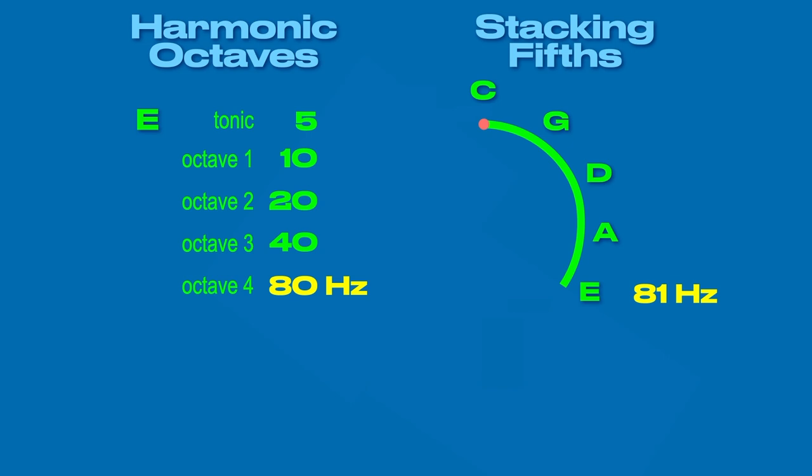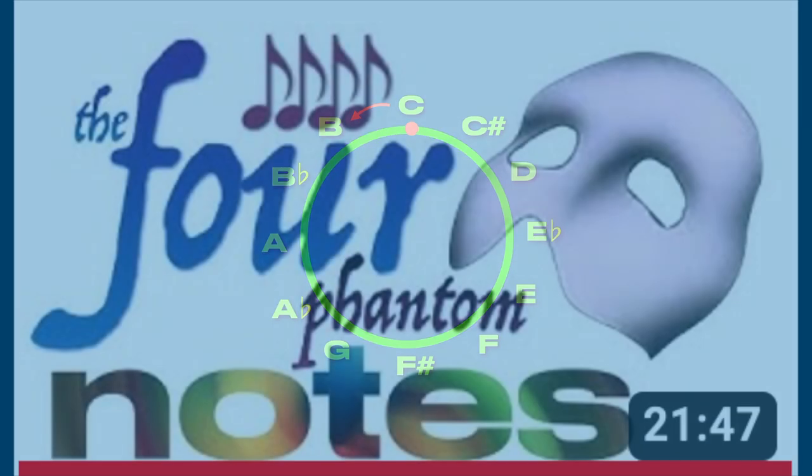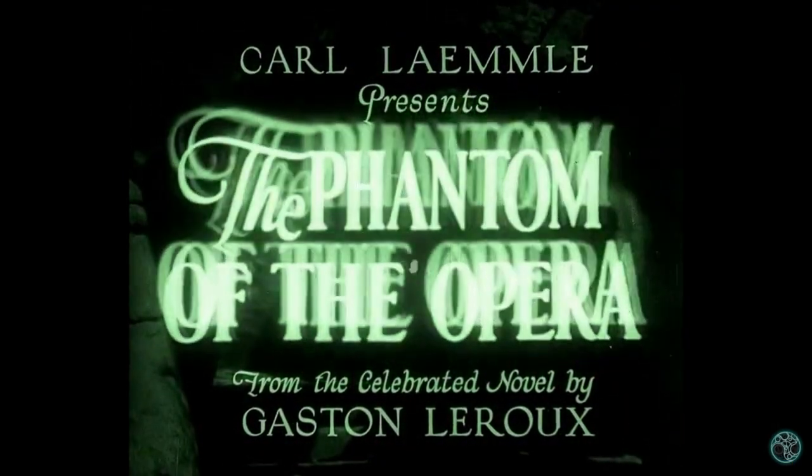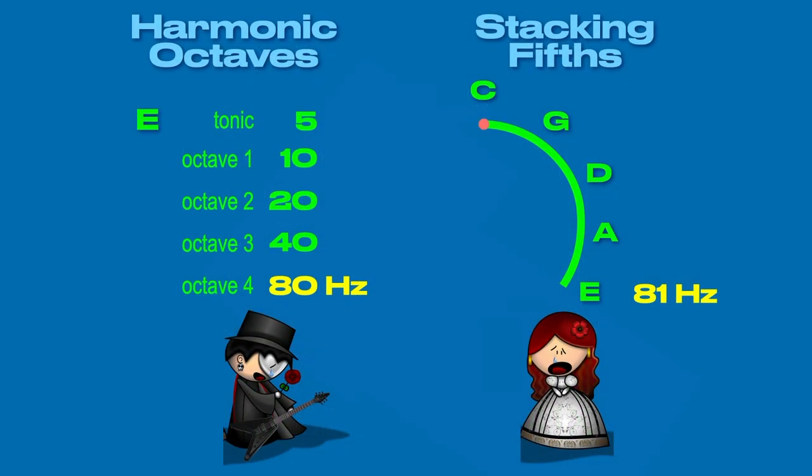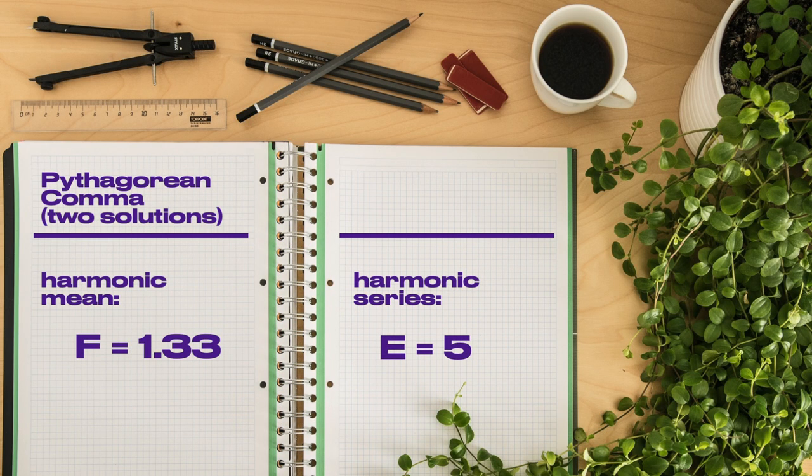Instead, the harmonic series, placing E at 5, 10, 20, 40, and 80 Hz, naturally reduces the interval enough to allow for the resulting C octaves to fit in the scale perfectly doubled. In my earlier video on the Phantom of the Opera, I show how the tension between harmonic E and E is encoded into the story, where Christine Day represents stacking fifths and the E value of 81, while the Phantom represents harmonic 5 in the opera's box 5 and the E value of 80.